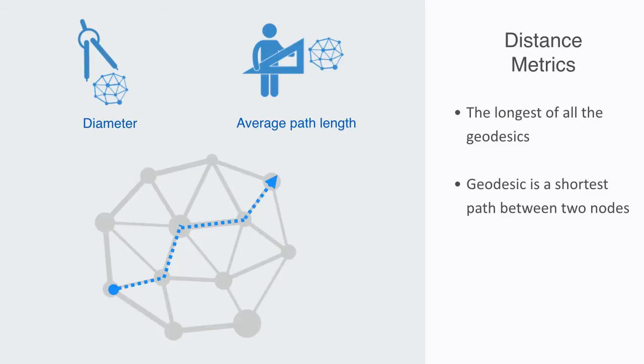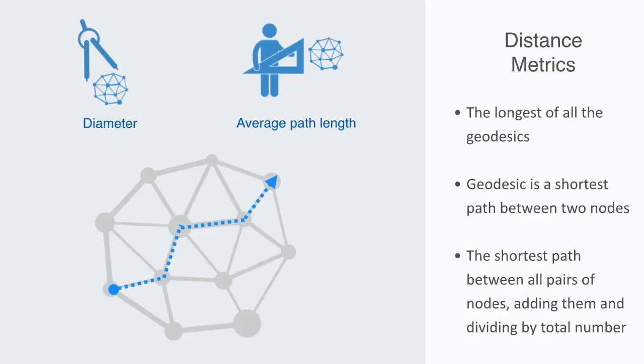And this will give us an idea of how far something will have to travel to get all the way across the network. The average path length is calculated by finding the shortest path between all the nodes, adding them up, and then dividing by the total number of pairs. This will show us the number of steps, on average, it takes to get from one member of the network to another.